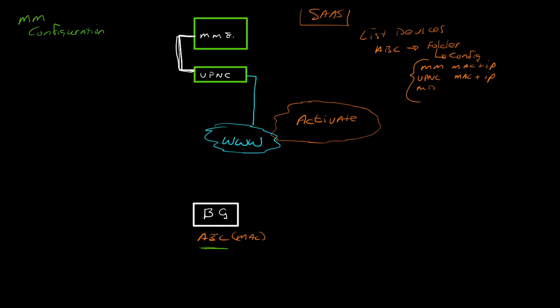What's important is where does this MAC address fit into that folder structure. Let's say I've got two folders — folder one and folder two. Inside folder one there might be subfolders, with config one, and folder two has config two. What could be different between these configurations — for instance, in folder one we want to deploy all our 7005 devices, and in config two we want to deploy all our 7010 devices.